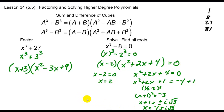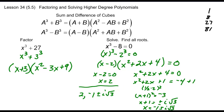So in this case, there are actually three solutions. One is x equals 2, and the other two are negative 1 plus or minus i root 3. Notice the second set of solutions is a complex or imaginary solution — there are no real numbers there.